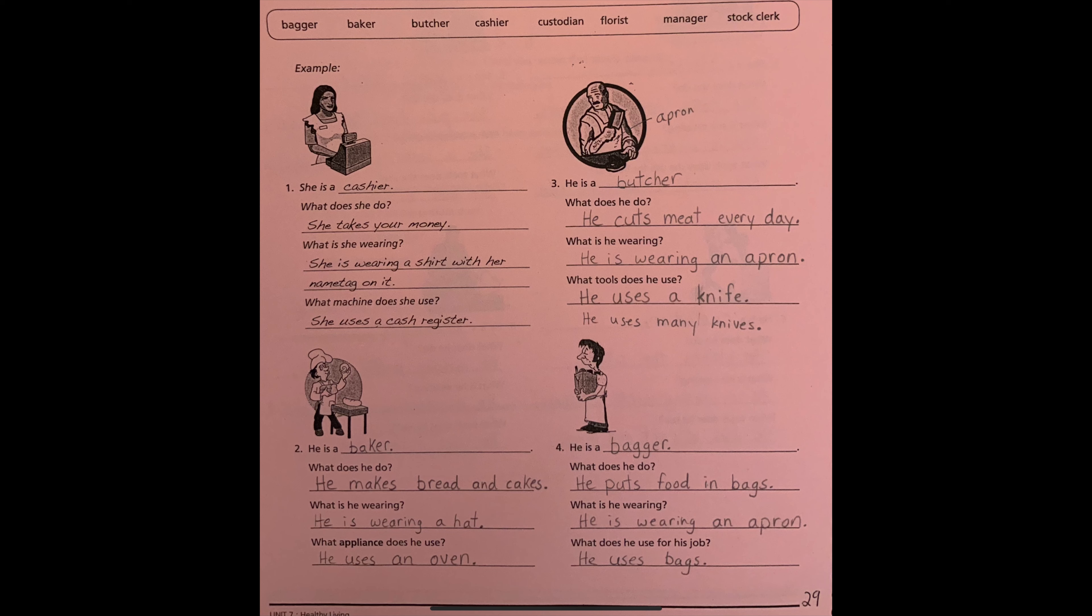What is he wearing? He is wearing an apron. So students, this is an apron. You put it on over your shirt, so your shirt is clean when you are doing messy work. Apron, A-P-R-O-N.